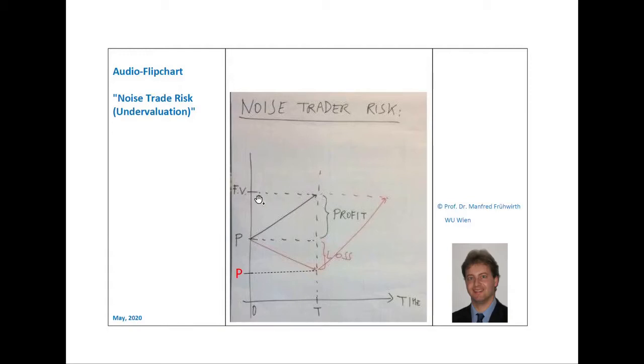On this flip chart, we assume that the price hits the fundamental value at time T. So, ideally, the arbitrage share buys the stock at time 0 at the original price P, waits until time T, and then sells the stock at the price FV.